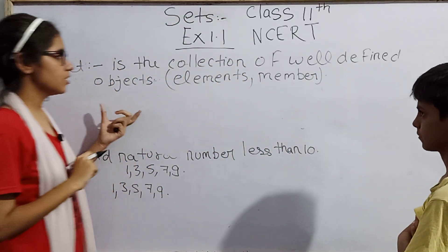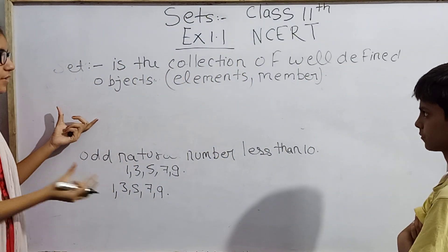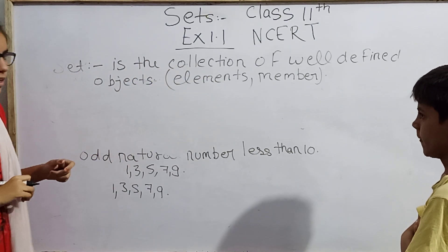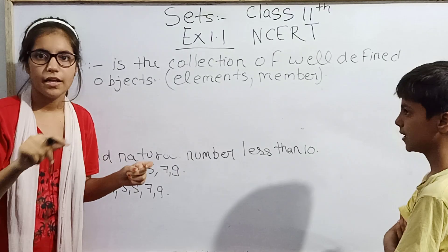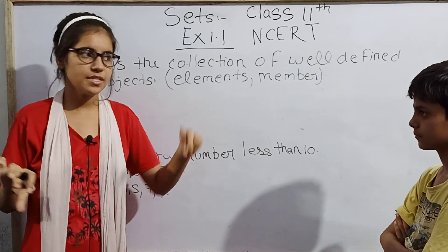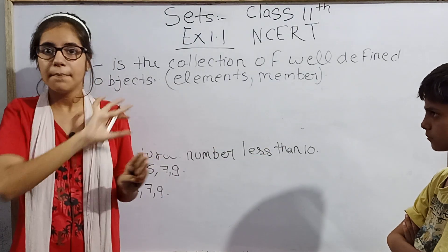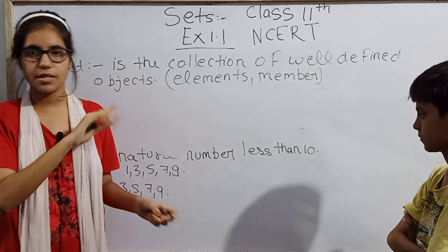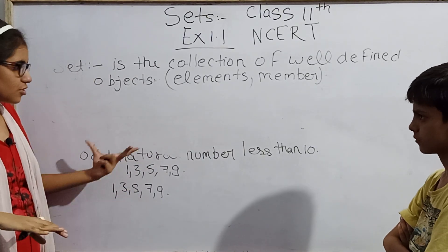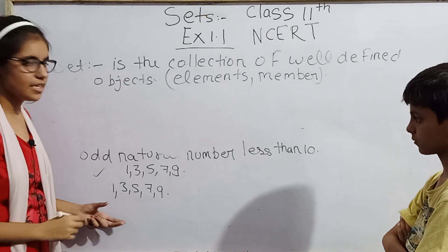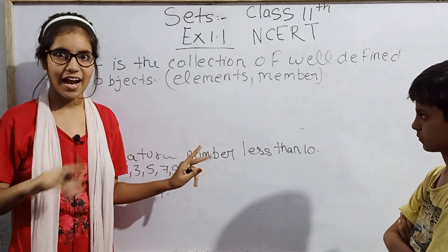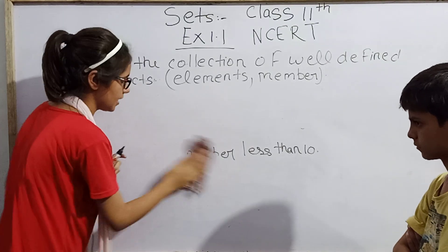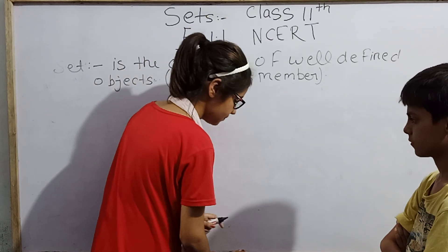Now, what is the link between that example and this definition of Sets? A set is the collection of well-defined objects. In our first example, the collection was not well-defined — Sarim's answer was different and my answer was different, so it is not well-defined. But in the second example, it is well-defined because Sarim's answer and my answer are both the same. That's why it is well-defined. So we can say the second example is a set, and our first example was not a set.